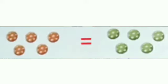Equal. Number of red balls is 5 and number of green balls is also 5. Since they are the same number, 5 equals 5. Kyunki red balls aur green balls equal hain, isliye humne equal ka sign lagaya.